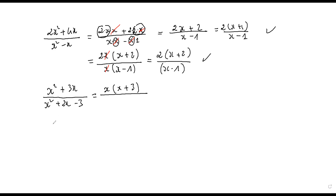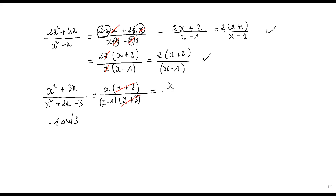The two numbers are negative one and three: three minus one is two, and three times negative one is negative three. So you can factorize the denominator as x minus one, factor x plus three. Cancel x plus three from numerator and denominator. The answer is x over x minus one.